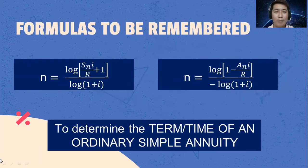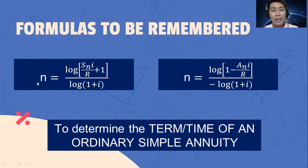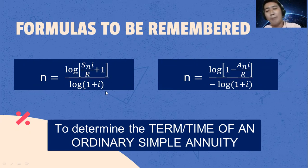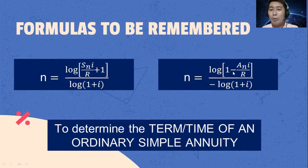What are the formulas to be used? If the given is future value, the formula is: N is equal to log of the quantity (S sub n multiplied by i over r, plus 1) divided by log of the quantity (1 plus i). If the given is present value, we use: N is equal to log(1 minus A sub n multiplied by i divided by r) over negative log(1 plus i).